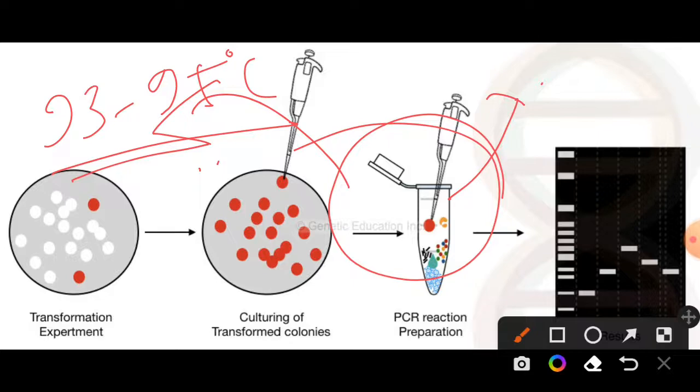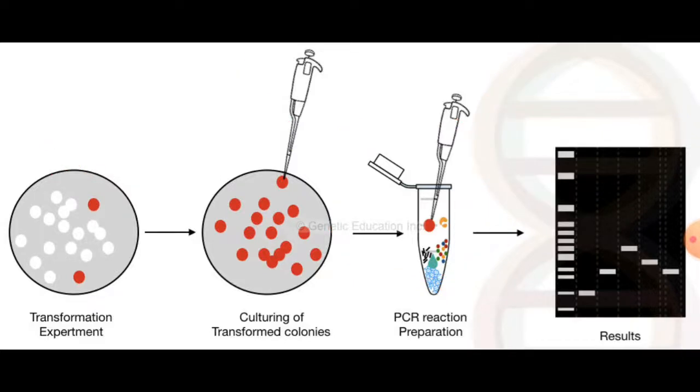Now we will add our primer. This primer is specific for the genetic construct and obviously our gene of interest. That means it will ensure that our genetic construct contains the gene of interest.